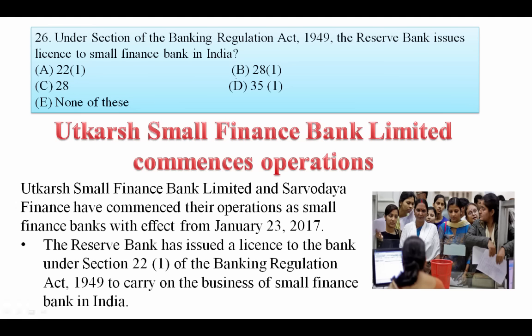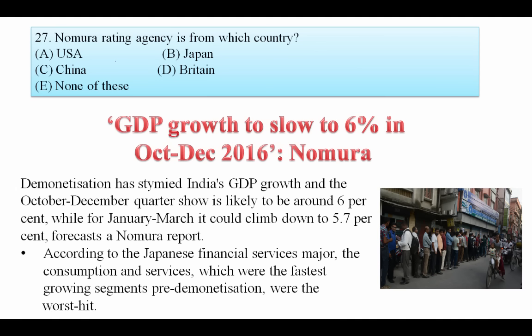Under which section of the Banking Regulation Act 1949 does the Reserve Bank issue licenses to small finance banks in India? Utkarsh Small Finance Bank Limited and Sarvodaya Finance commenced their operations as small finance banks from January 23, 2017. The RBI issued the license under Section 22 of the Banking Regulation Act 1949 to carry the business of a small finance bank. Your answer is 22.